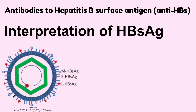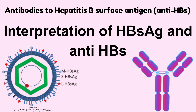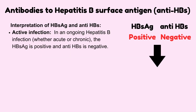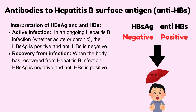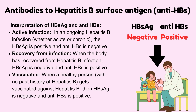Interpretation of HBsAg and anti-HBs: In an active infection, whether acute or chronic, HBsAg is positive and anti-HBs is negative. Upon recovery from infection, HBsAg is negative and anti-HBs is positive. When a healthy person with no past history of hepatitis B gets vaccinated against hepatitis B, HBsAg is negative and anti-HBs is positive.